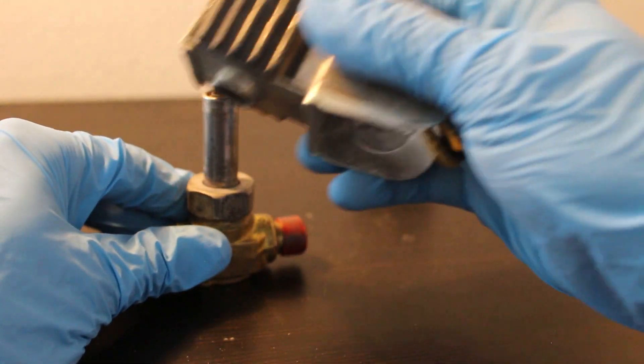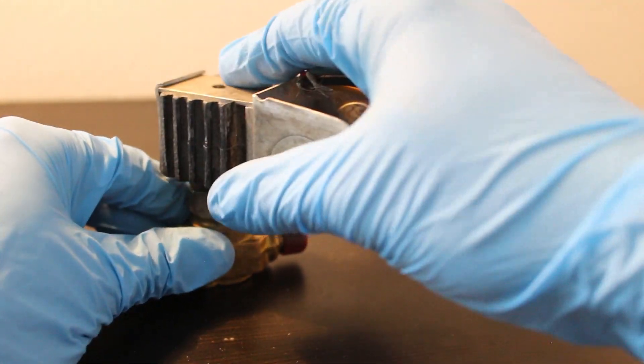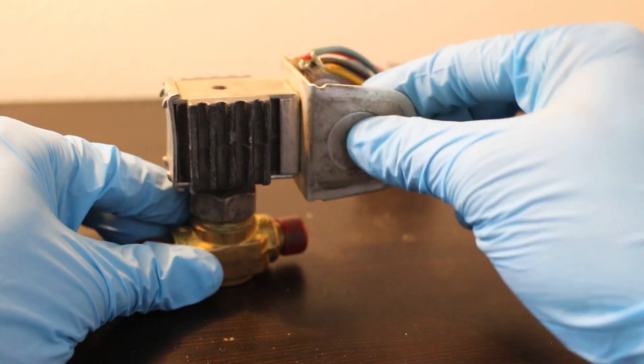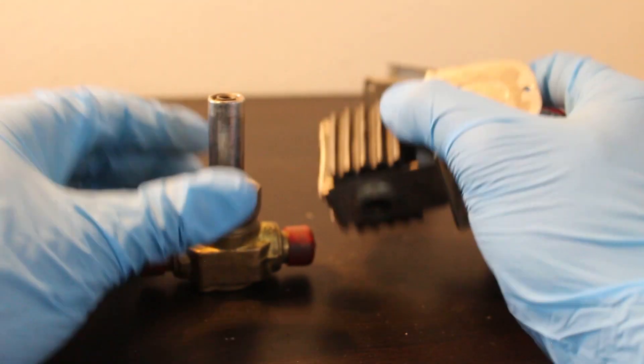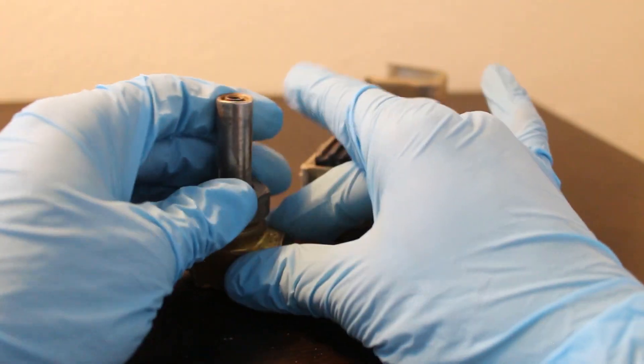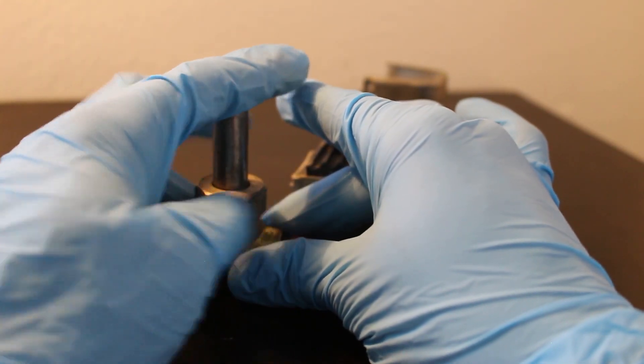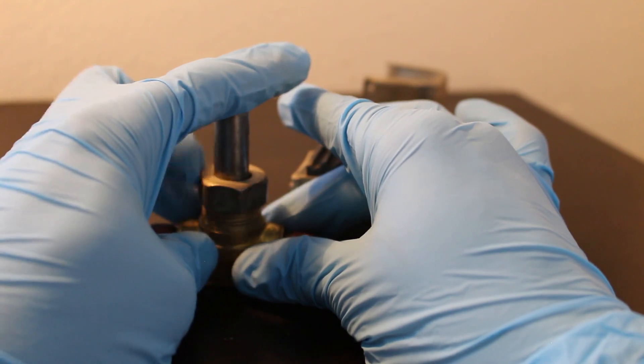So let's just go over this real quick. Power supplied, solenoid coil gets energized. Now I have a magnetic field around here, and I will show you guys the actual plunger.